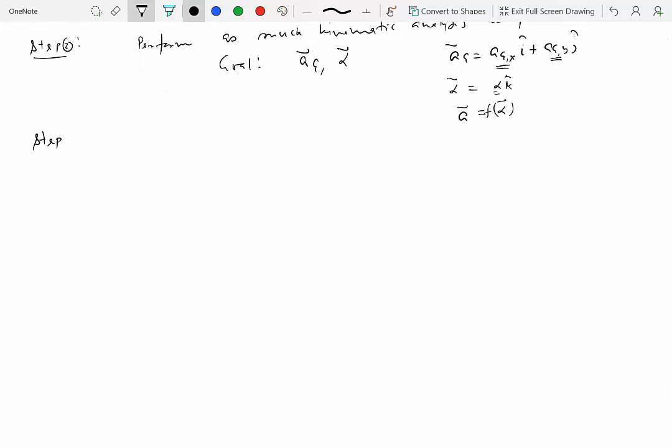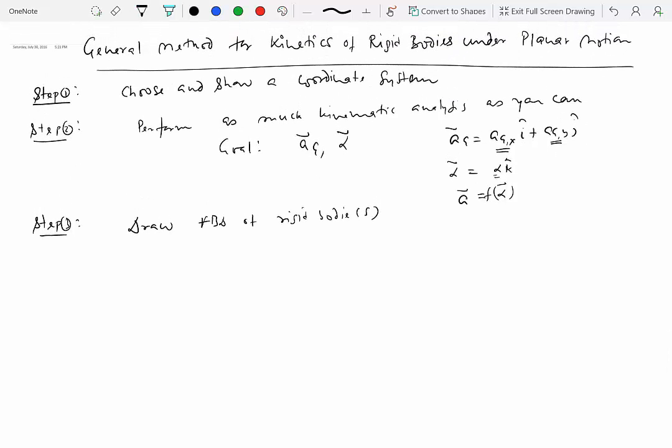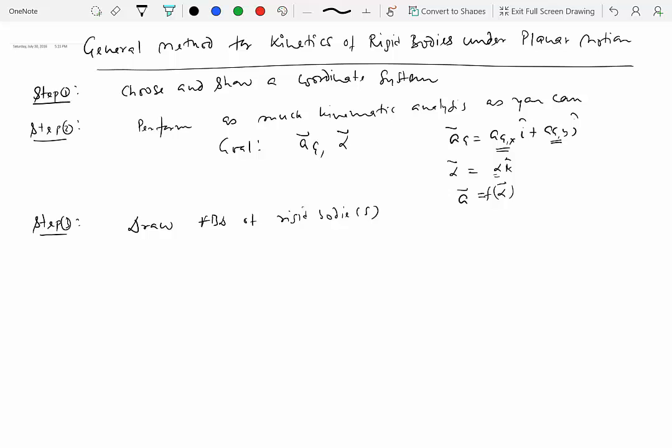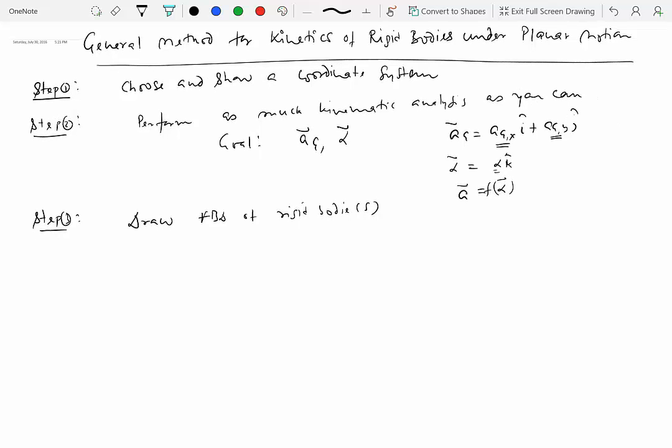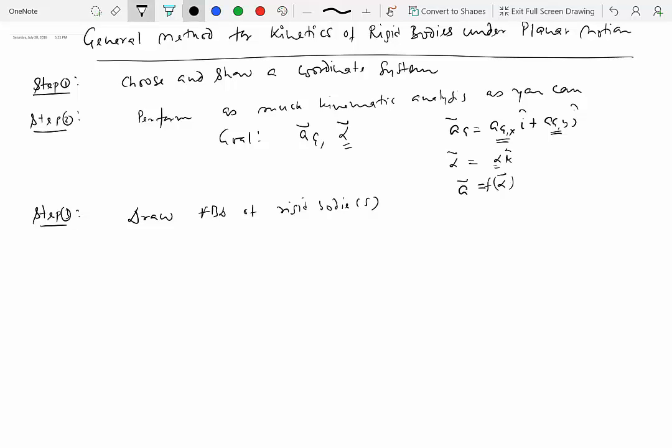Step three is to draw free body diagram of rigid bodies. So I'm going to write 's' in parenthesis to indicate that if you have more than one, you have to draw free body diagram of all of them. You can kind of see that we are basically writing everything that looks familiar to you from module three on general method for kinetics of particles and rigid body. So far everything has been the same except that there was no angular acceleration for the particles. And of course we didn't have to write A sub G because all the mass was concentrated at one point, which could be seen as center of mass as well.